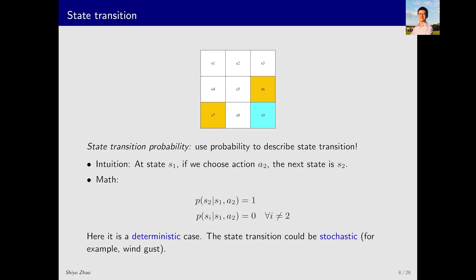Therefore, a more general approach is to use state transition probabilities. This is the first time we introduce probability into the course. Intuitively, if I am in S1 and take action A2, aiming to move right, the next state is S2. This intuition translates into mathematics through conditional probability. For those unfamiliar with conditional probability, my book offers an introduction to basic probability concepts in the appendix. Don't worry even if you haven't studied it before as the concept is quite intuitive. For example, if I am currently in S1 and take action A2, what is the probability that I will move to S2? This probability is 1. Similarly, if I am in S1 and take action A2, the probability of moving to any state SI, where I does not equal 2, is 0. This demonstrates how conditional probability can describe state transitions.